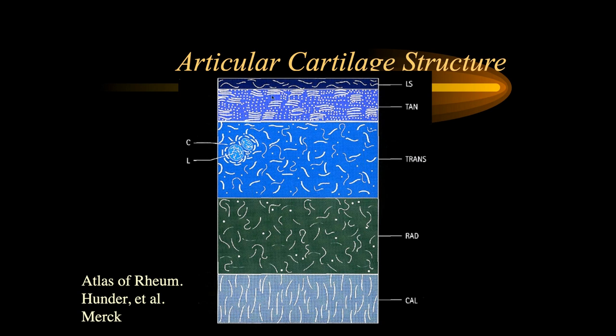Another way to look at this: in the superficial layer, the collagen fibers are mostly horizontal. Below that, they're still mostly horizontal but starting to make a transition. Then you get into a transition area where the collagen fibers are more randomly located, with a cellular component, and they then become more radial. In the calcified layer, they're more vertical.